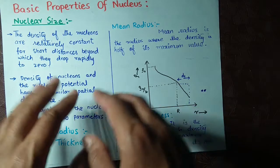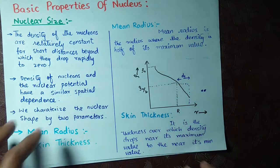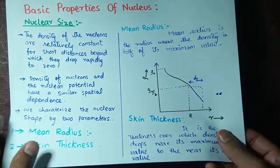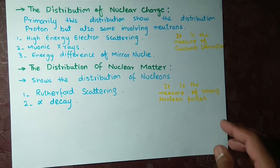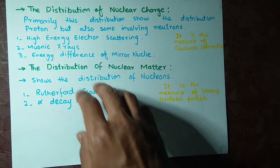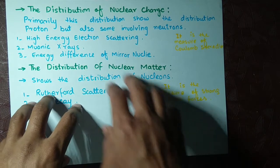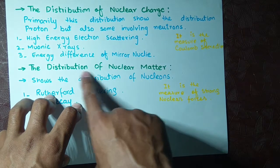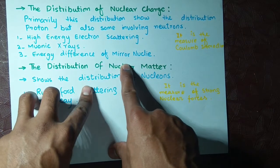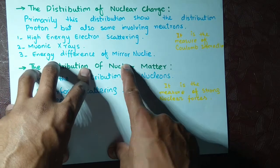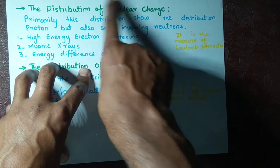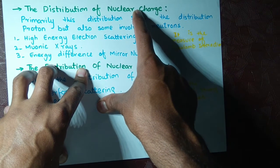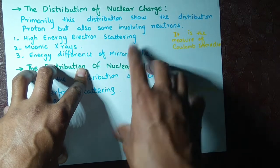These were the terminologies to understand first. After that we have two kinds of distributions: the first is the distribution of nuclear charge, and the second is the distribution of nuclear matter. When we talk about nuclear charge distribution, we have a concern of Coulomb interaction.